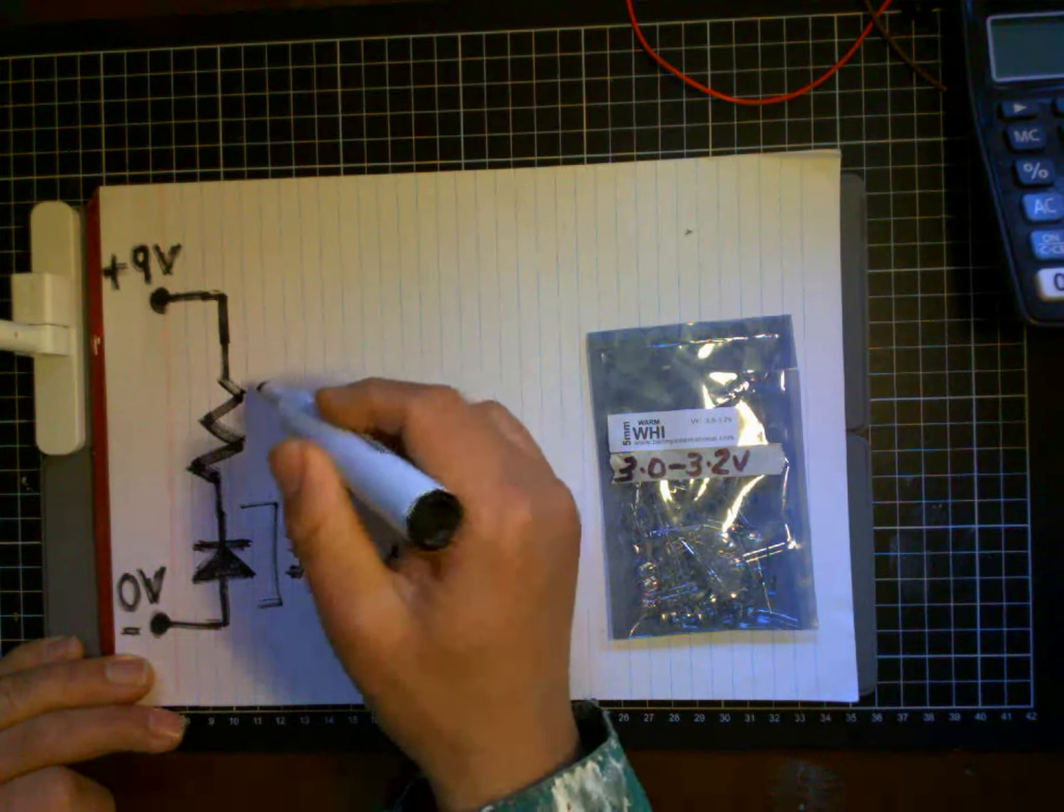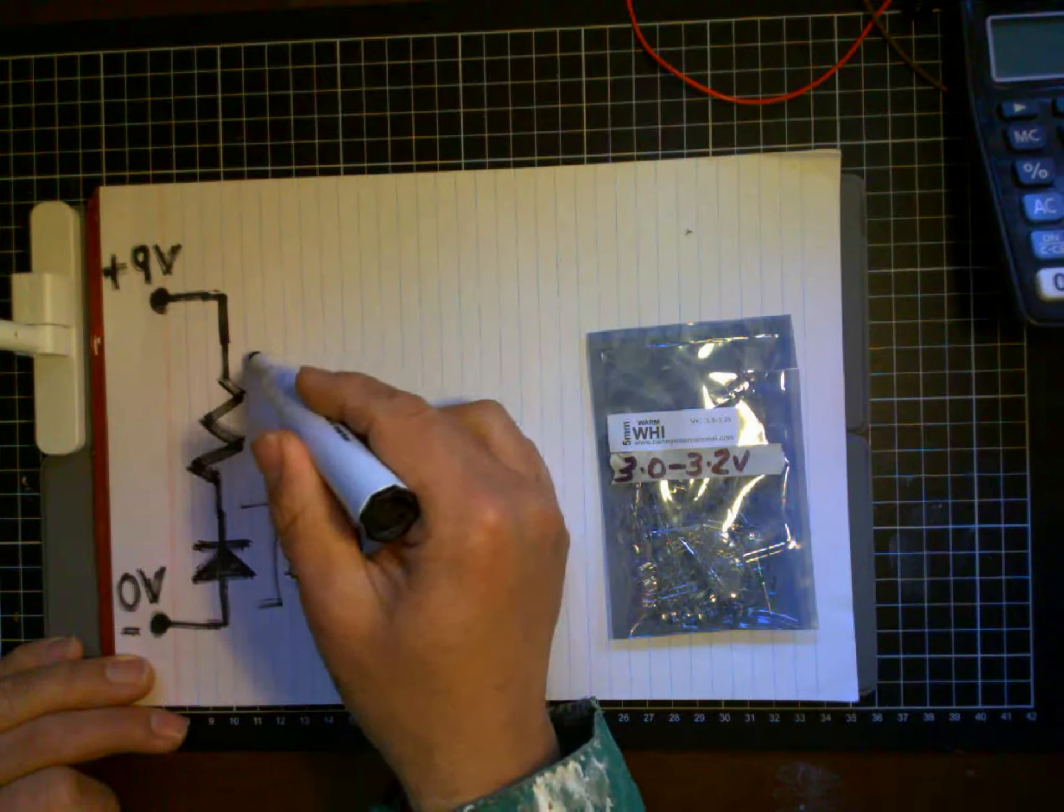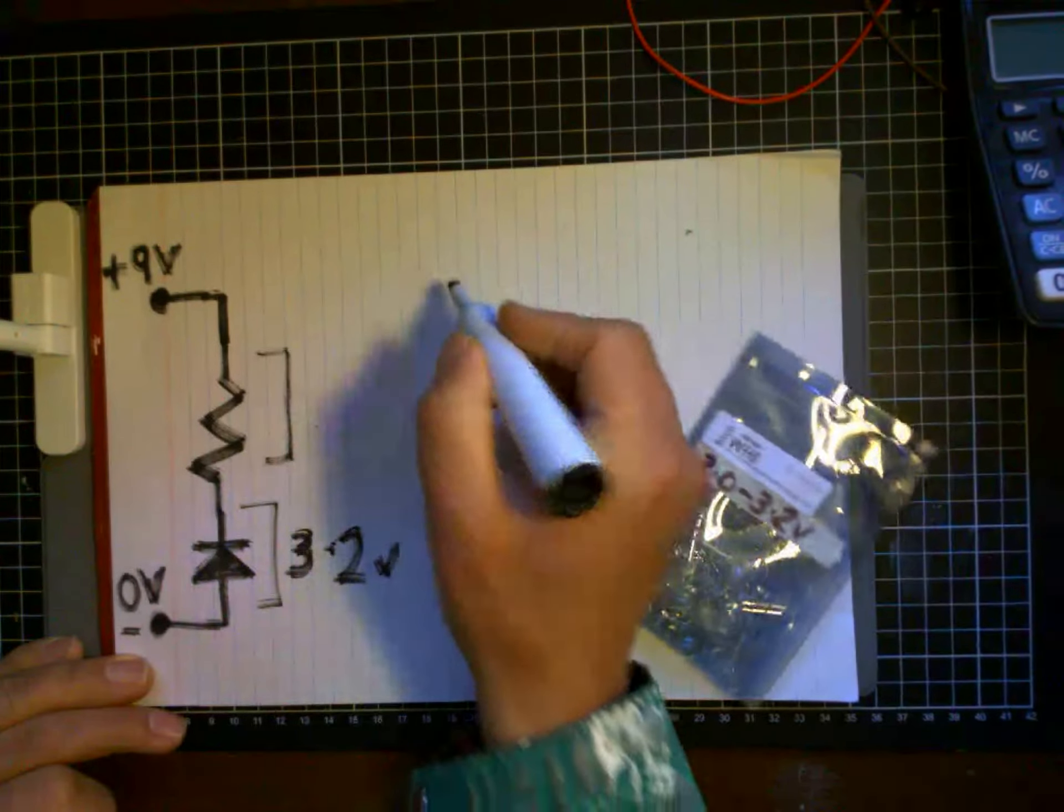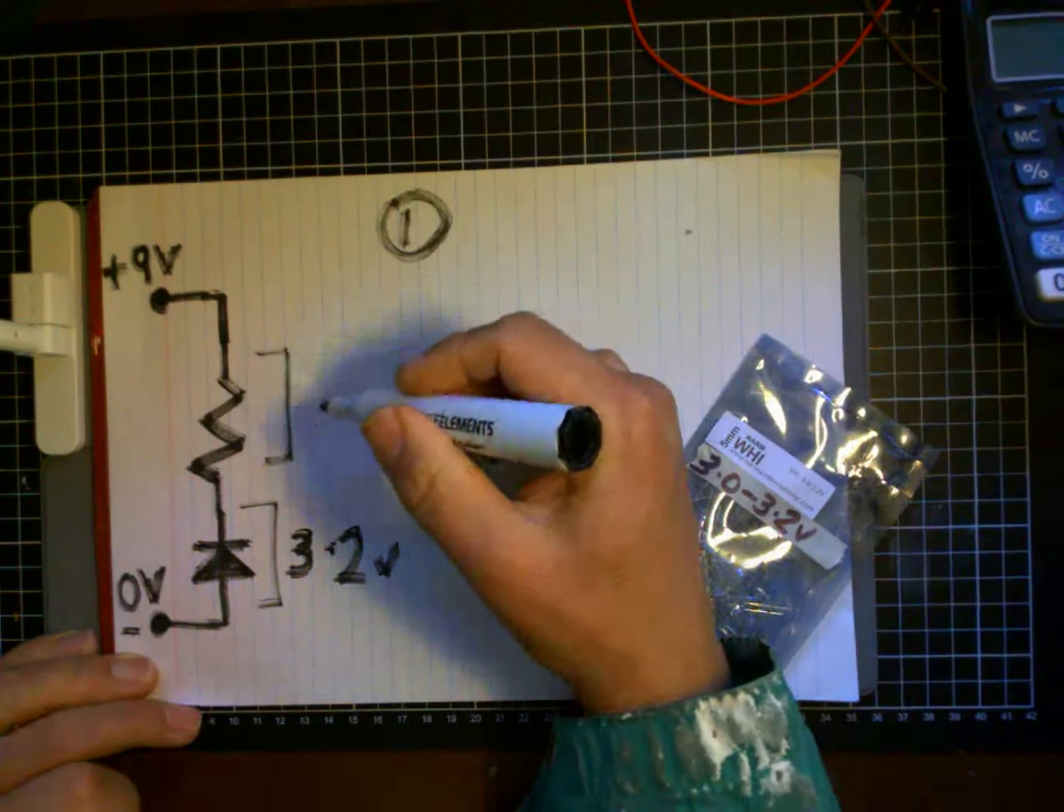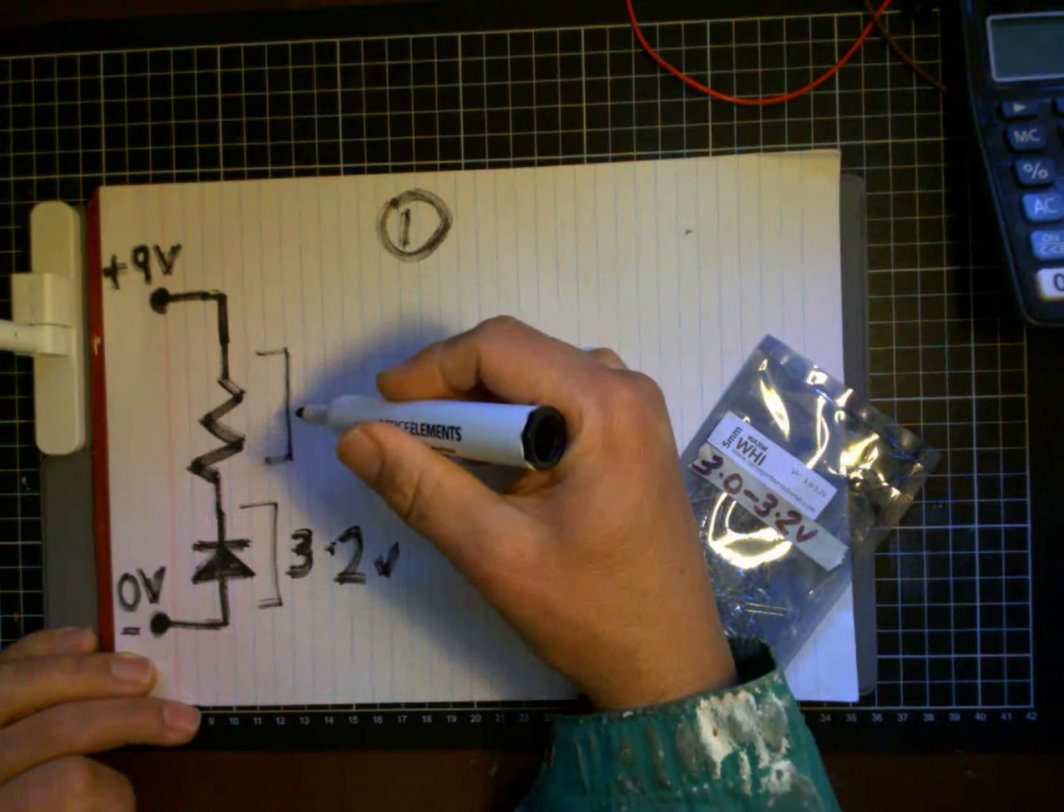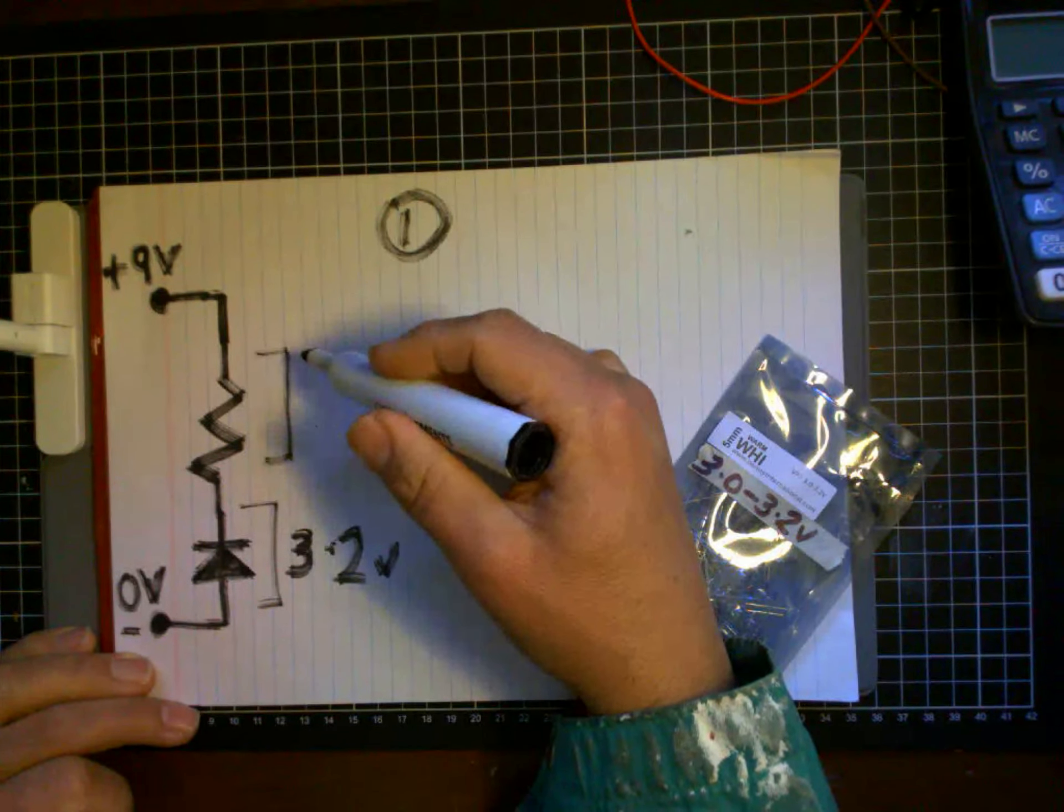Therefore, all we have to do to work out the resistance of our resistor is step one: work out the leftover voltage to be used up by the rest of the circuit, which in this case is the resistor.